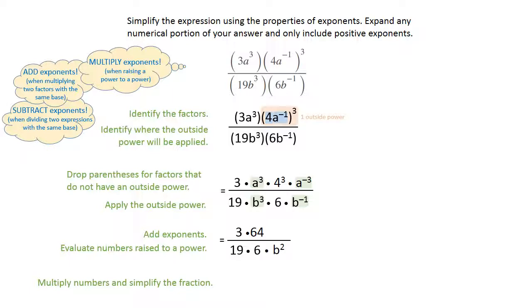Finally, we're going to multiply those numbers together and simplify the fraction that we get. The 3 is going to be multiplied by the 64, and the 19 is going to be multiplied by the 6. Get your fraction bar. 3 times 64 is 192. 19 times 6 is 114, and then the b squared is still on the bottom.